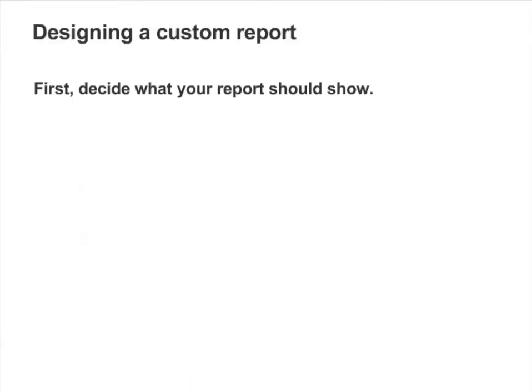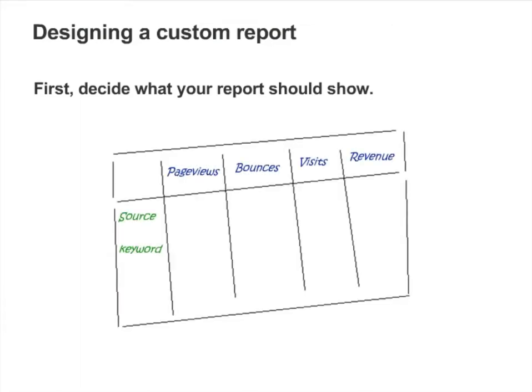You can create reports that show exactly the information you want to see, organized in the way you want to see it. When creating a custom report, think of a table. Dimensions are the rows of the table, and metrics are the columns in the table.